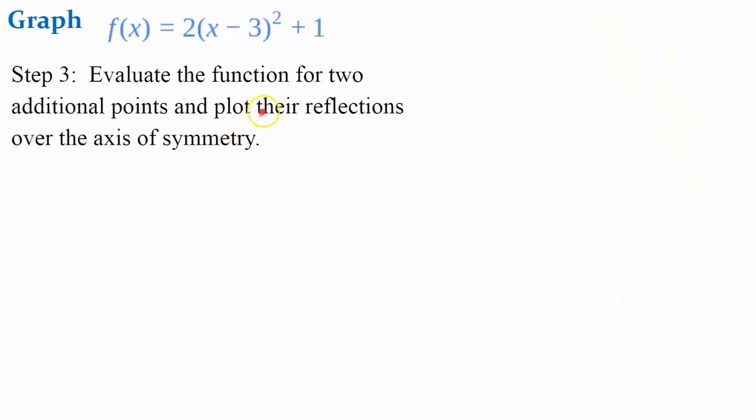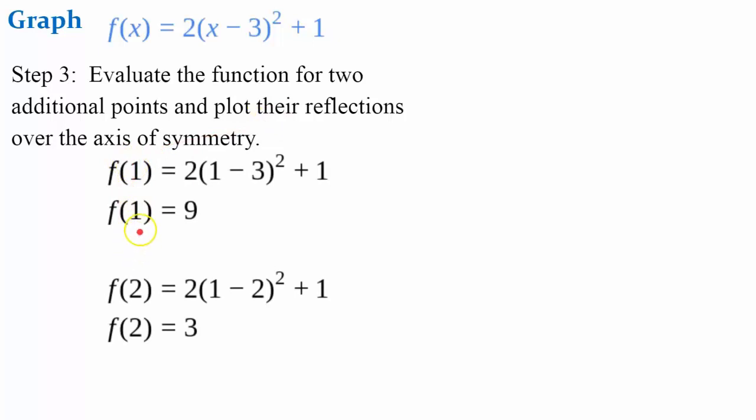So I selected inputs of 1 and 2, giving me an ordered pair of (1, 9) and an ordered pair of (2, 3).